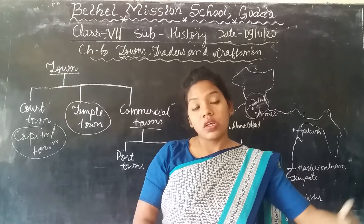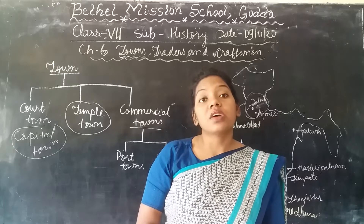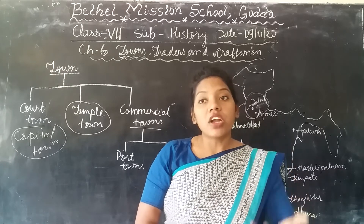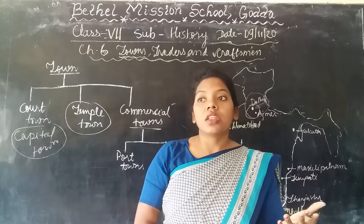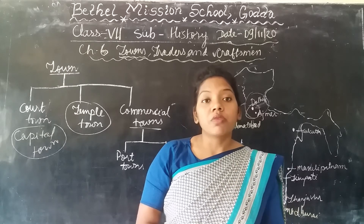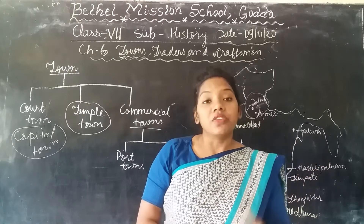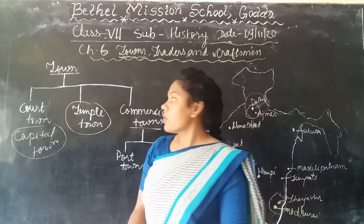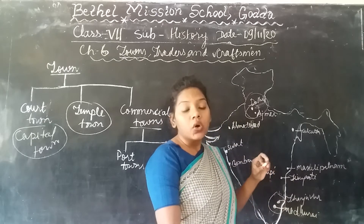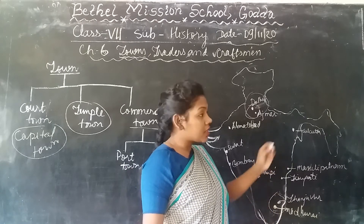The temple town continued to grow because kings had great devotion towards the deity, and they used to give funds to the temples. Even rich merchants used to give funds to the temples so that the temple town would grow in different ways. The best example of a temple town is Madurai in Tamil Nadu, which was also famous as a temple town.